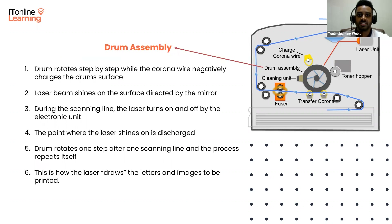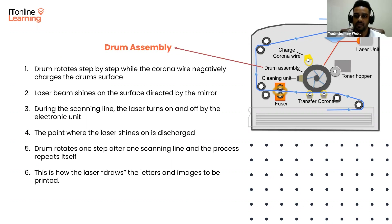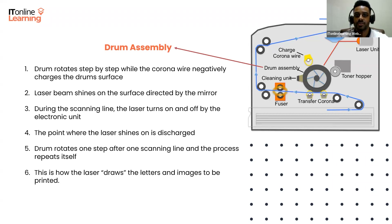During printing, the drum rotates step-by-step while a charged corona wire on top induces charges on the drum surface. This is done by a large voltage applied to the charged corona wire. Some printers use a charge roller instead of a corona wire to apply charges to the drum surface, but in essence the principle is still the same. Following this, a focused laser beam shines on the surface back and forth, directed by a mirror.